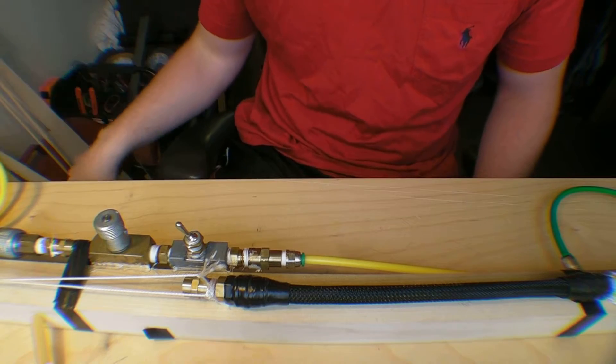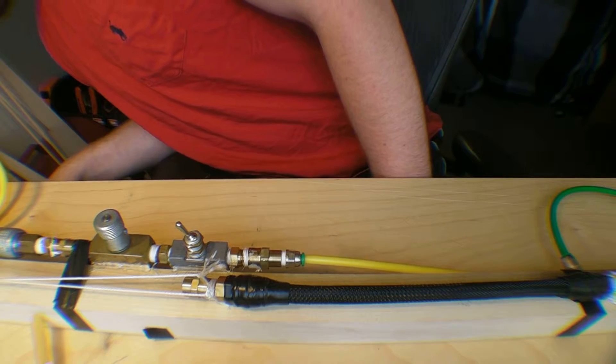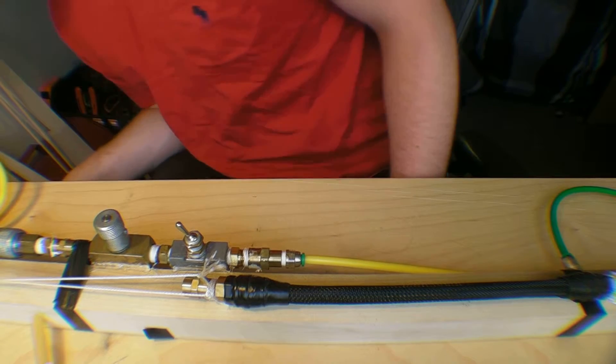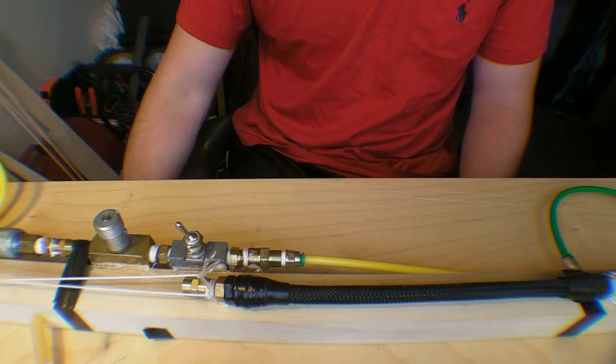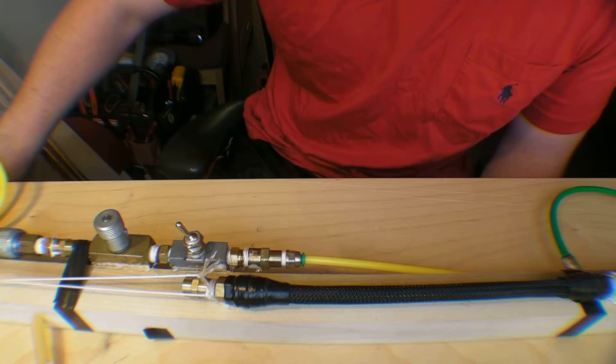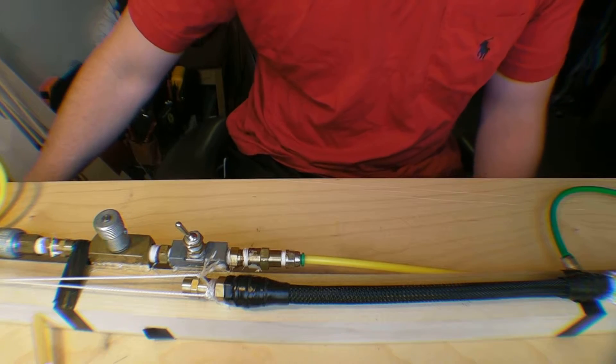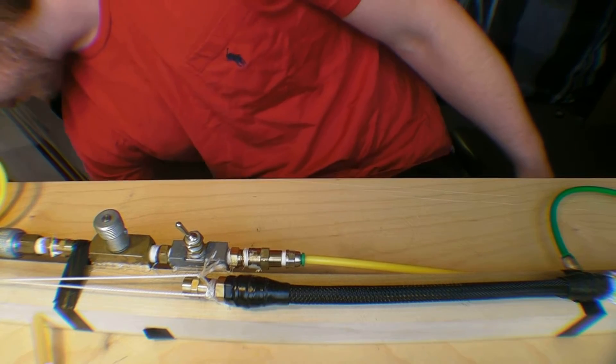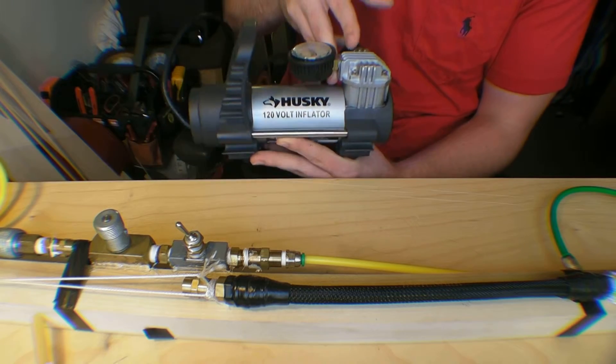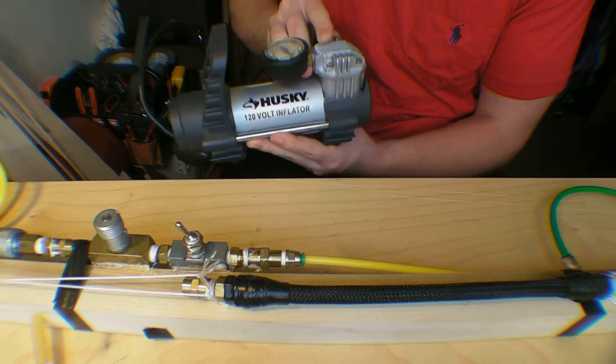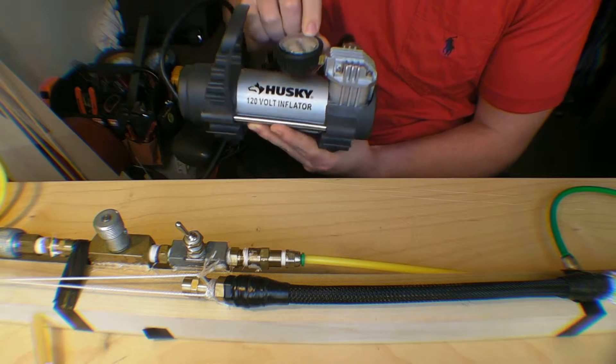That's hooked up to a 7 gallon air tank. I was thinking about my trash can, I didn't buy bags for it the other day. So yeah, I have a 7 gallon air tank, and I pump that up with this little guy, little pneumatic compressor.